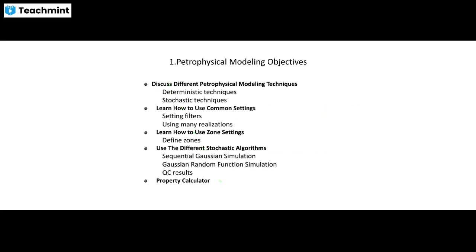Here we are going to see the objectives of our petrophysical modeling. We are going to discuss different petrophysical modeling techniques — that is deterministic techniques and stochastic techniques. You will also learn how to use common settings like filters, multiple realizations, zone settings, and different stochastic algorithms like SGS, GRFS — that is Sequential Gaussian Simulation and Gaussian Random Function Simulation — and QC results and the property calculator.